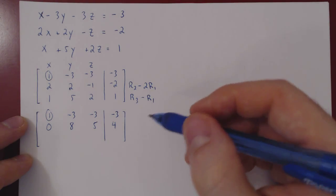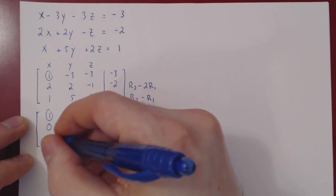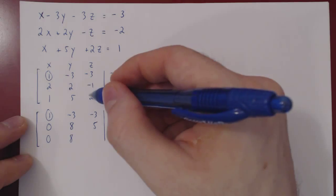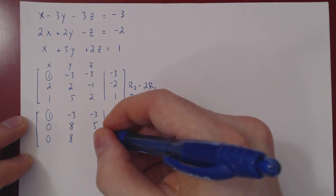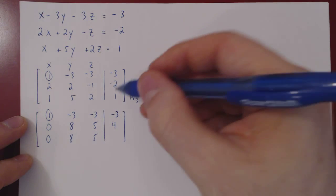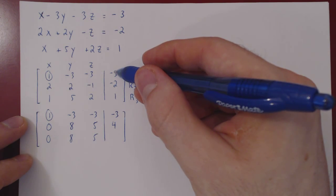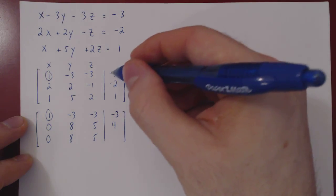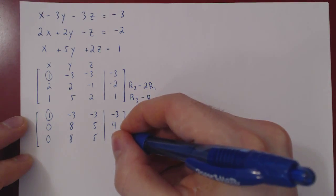Apply the second row operation. 1 minus 1, 0. 5 minus negative 3 is 5 plus 3, 8. 2 minus 3, minus negative 3 is 2 plus 3, 5. 1 minus negative 3 is 1 plus 3, 4.